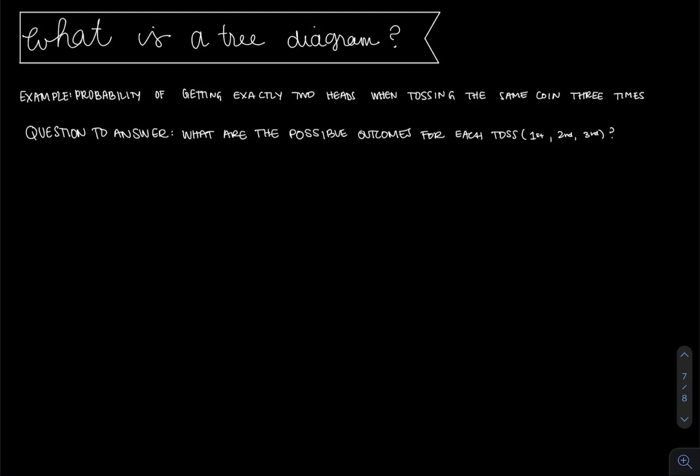And again, we're going to go back to that example when we're trying to toss a coin three times and get exactly two heads. The question we want to answer here for constructing this tree diagram is what are the possible outcomes for each toss?